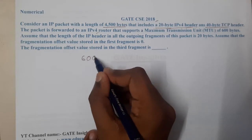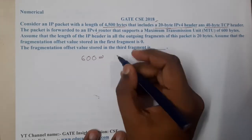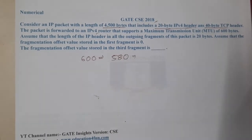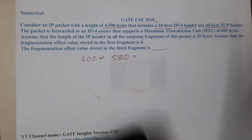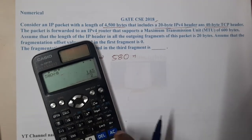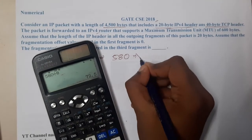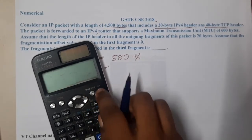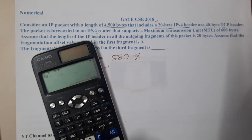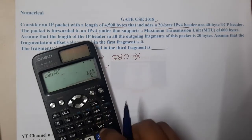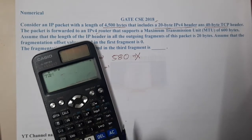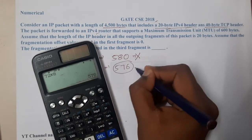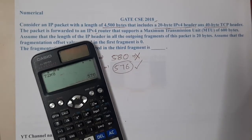With an MTU of 600 and a 20-byte header, the fragment can carry 580 bytes of data. However, when calculating the fragment offset we divide by 8, and 580 is not divisible by 8. So 580 / 8 = 72.something, meaning we use 72 × 8 = 576 bytes — the closest value divisible by 8.